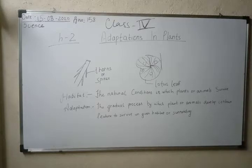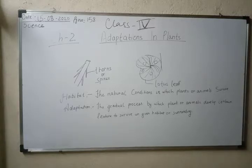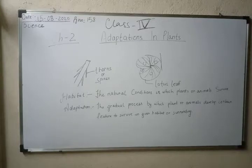Adaptation is a very slow and gradual process by which plants or animals develop certain features to survive in a given habitat or surroundings.